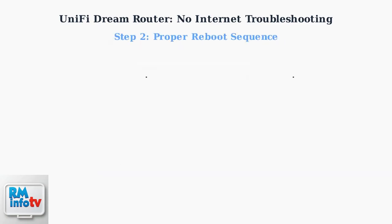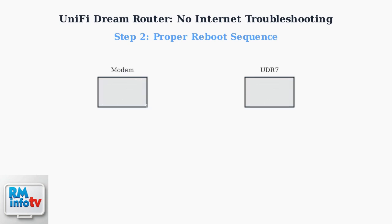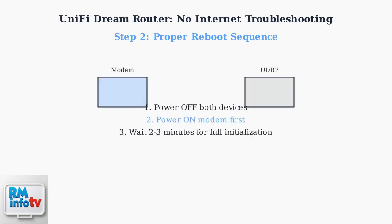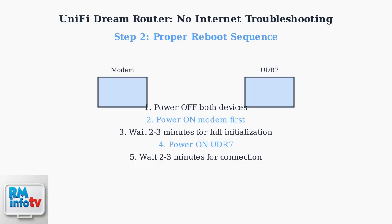Step two is performing a proper reboot sequence. First, power off both devices completely. Then power on the modem first and wait two to three minutes for full initialization. Next, power on the UDR7 and wait another two to three minutes for the connection to establish.